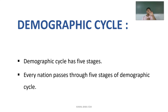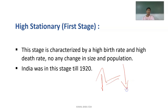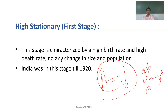Now we'll move on to the demography cycle. This cycle shows what stages a country goes through — how the birth rate and death rate change, whether in a stationary or declining manner. Every nation in the world goes through five stages of the demographic cycle. The first stage is High Stationary, characterized by a high birth rate and high death rate, with no change in population. The number of births equals the number of deaths. India was in this stage till 1920.